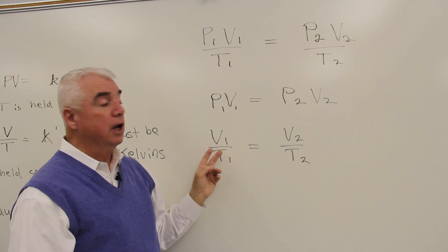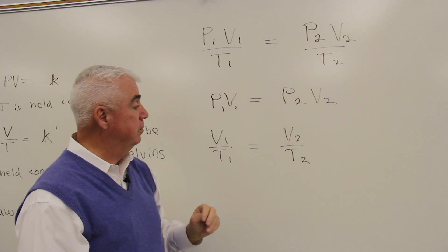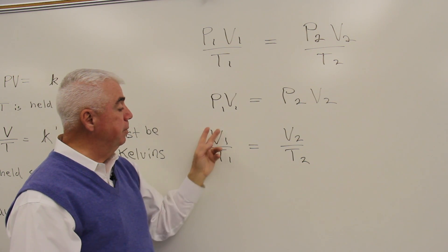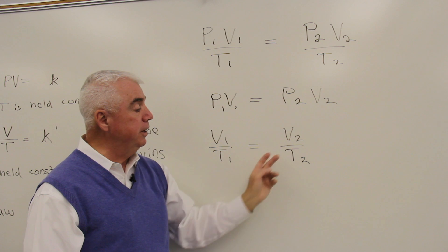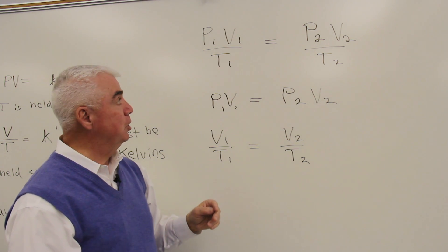If we were working at constant pressure, P1 is equal to P2, it cancels from the equation above, and we have V1 over T1 equals V2 over T2. Or we could come up with another gas law,